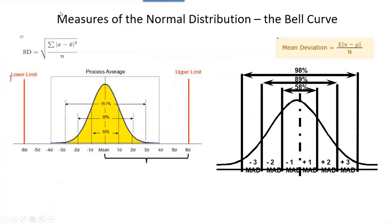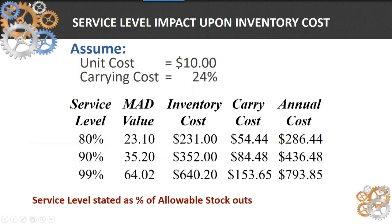Looking at a simple bell curve, here are the occurrences of demand across a normal average. Using standard deviation — the square root of the differences between the actual and the forecast squared, divided by the number of periods — we get standard deviation. Normally we use the simpler method of mean absolute deviation (MAD): the sum of the absolute demand variations divided by the number of periods. We can then assign a probability of occurrence, so 98% of the time demand is projected to be three mean absolute deviations away from the average.